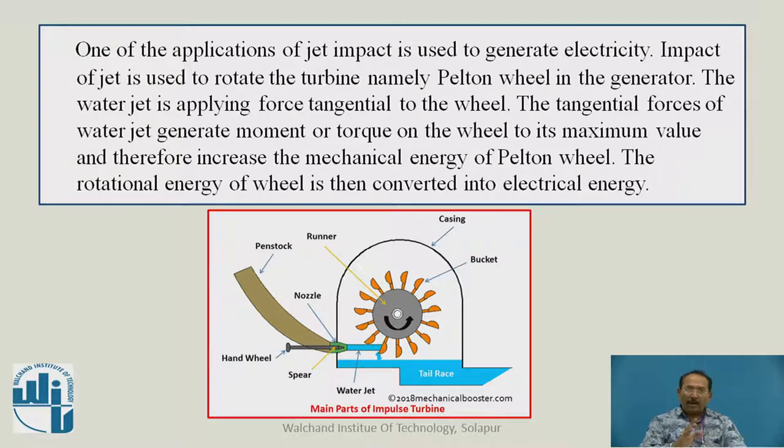One of the applications of the jet impact is used to generate electricity. Impact of jet is used to rotate the turbine, particularly the Pelton wheel in the generator. The water jet applies force tangential to the wheel, generating torque to its maximum value, increasing the mechanical energy. The rotational energy of the wheel is then converted into electrical energy.